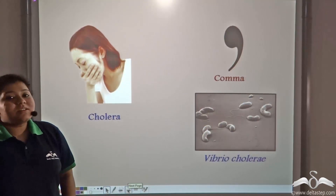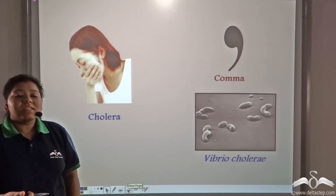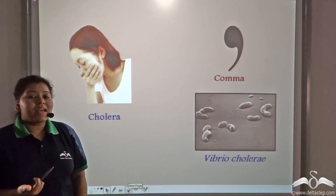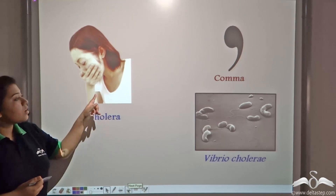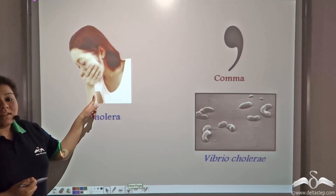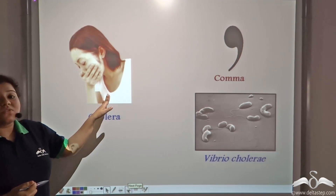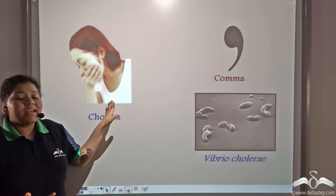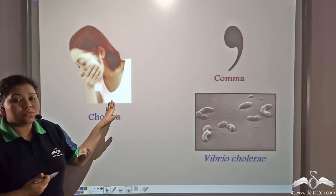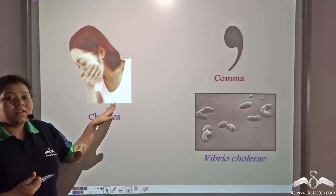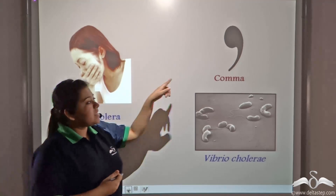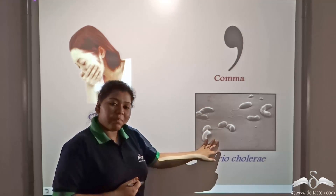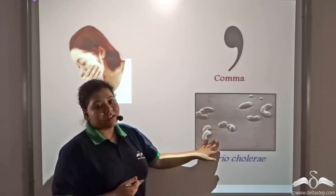Another disease that was predominant in many parts of the world was Cholera. The main symptoms of Cholera were a lot of vomiting and watery stools. Cholera was caused by this comma-shaped bacteria known as Vibrio cholerae.